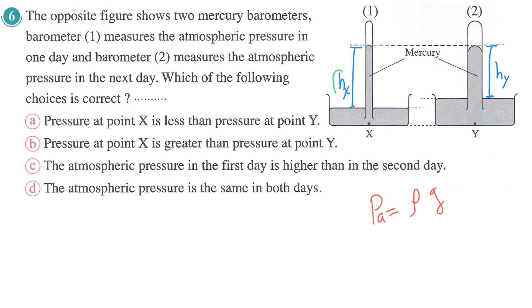HX is what determines the pressure. The thickness — meaning the width of the tube itself — is not related to the pressure. The height measured is from the separating surface to the level of mercury. So the expression is from the separating surface to the level of mercury. Looking at the choices, the pressure under point X and the pressure under point Y are what matter.